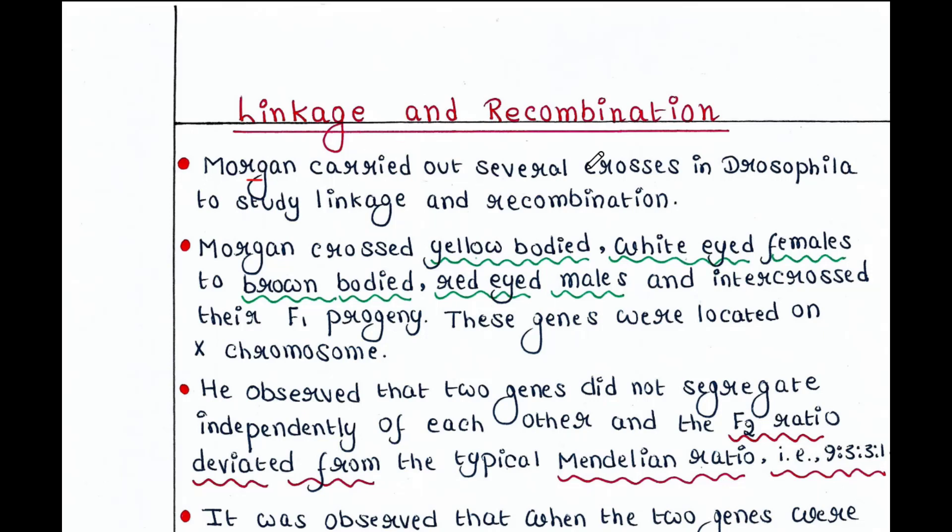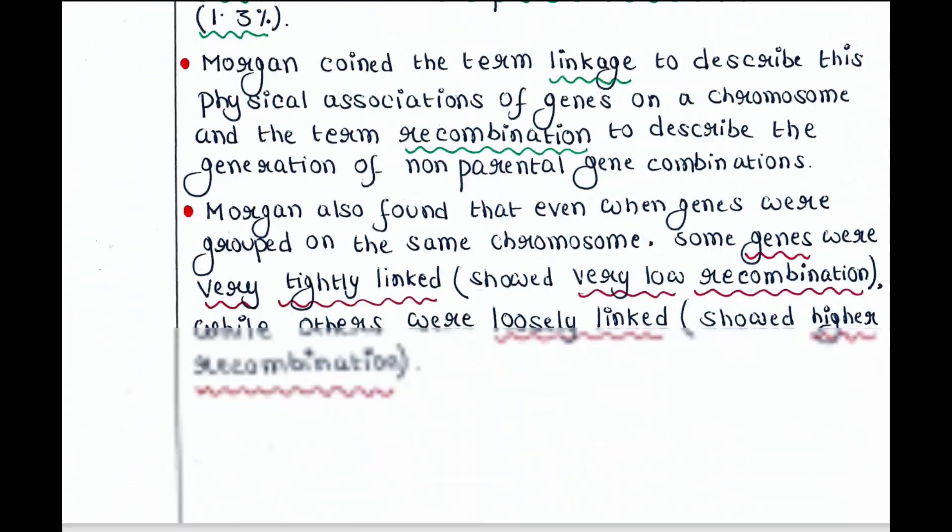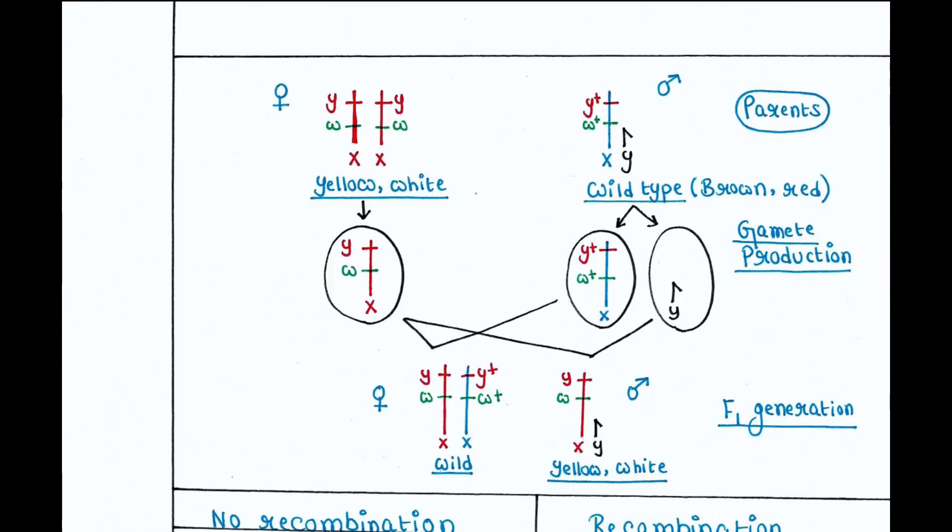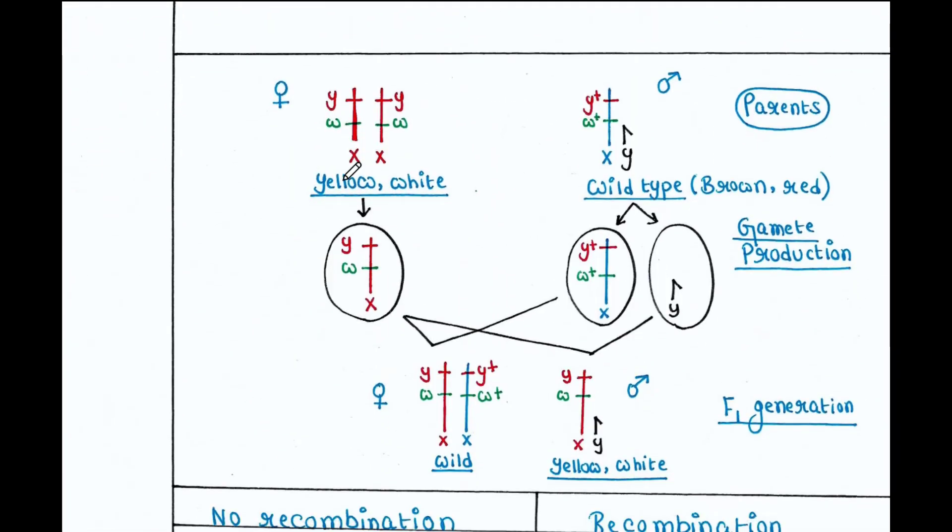Morgan carried out several crosses in Drosophila to study linkage and recombination. This is the cross made by Morgan.